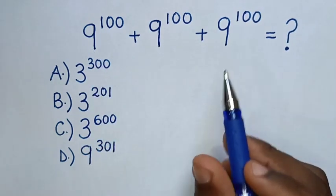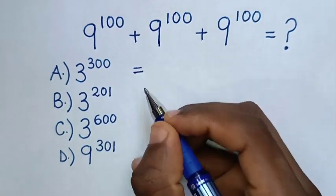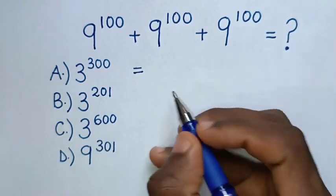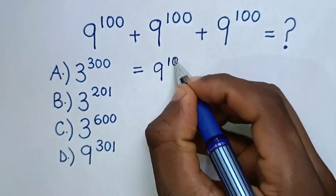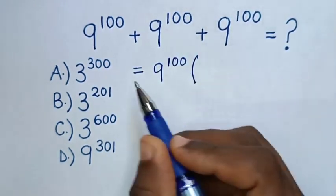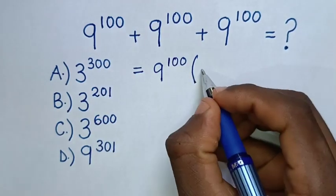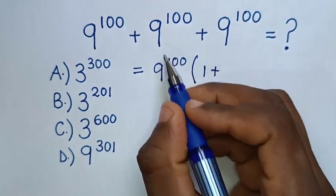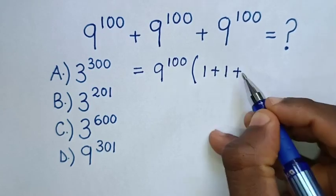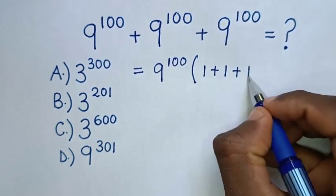So in this addition of exponents, it will be equal to, in here 9 to the power of 100 is common. So we take 9 to the power of 100 out of bracket, then 9 to the power of 100 divided by 9 to the power of 100 is 1 plus this divided by this is 1 plus this divided by this is 1 bracket.